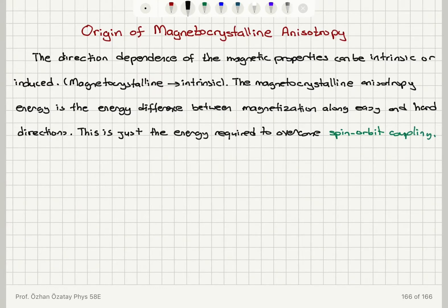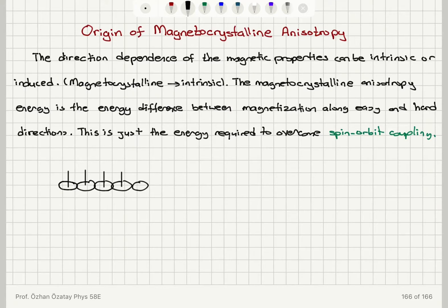So how does that work? Let's think about having our orbits oriented in a chain like this, with the spins — the magnetic moments — pointing up. This is basically the easy axis, and the orbits are aligned along the easy axis. This is configuration 1.